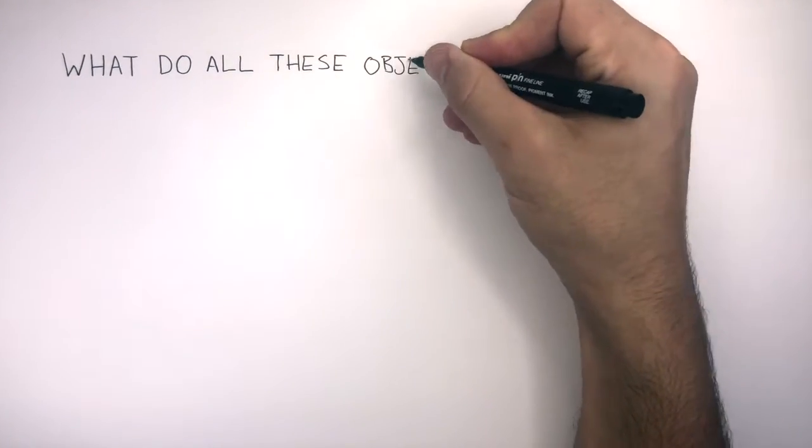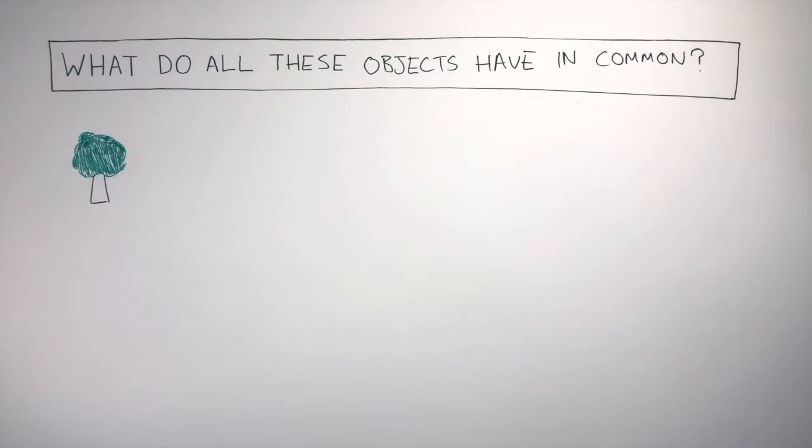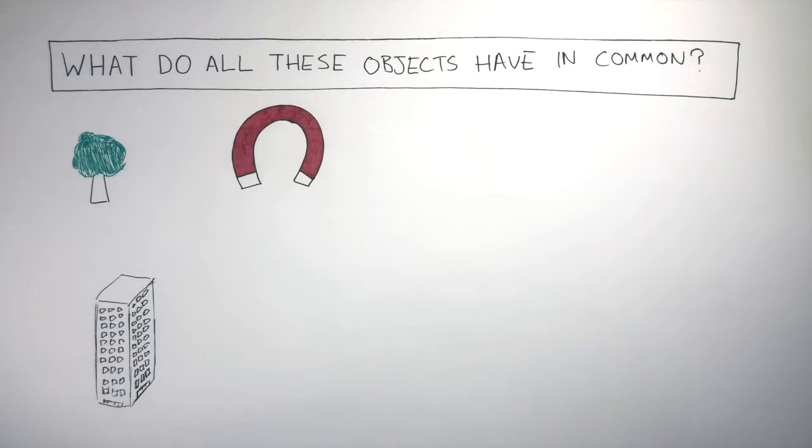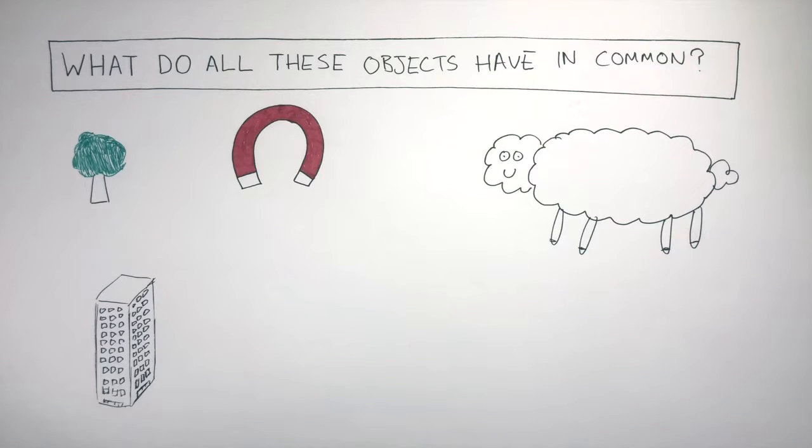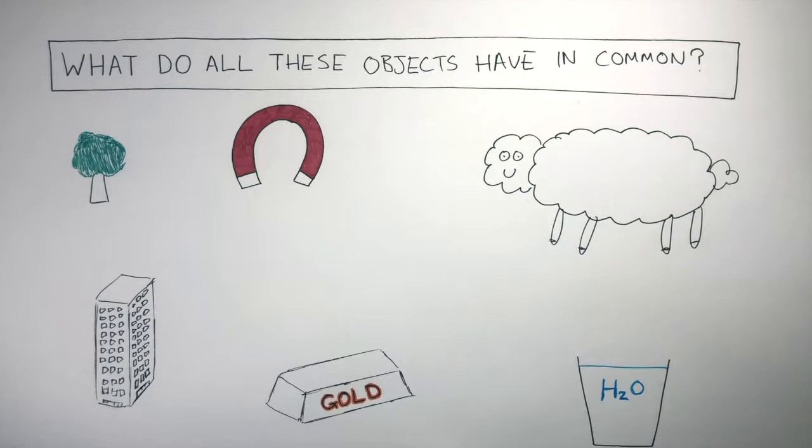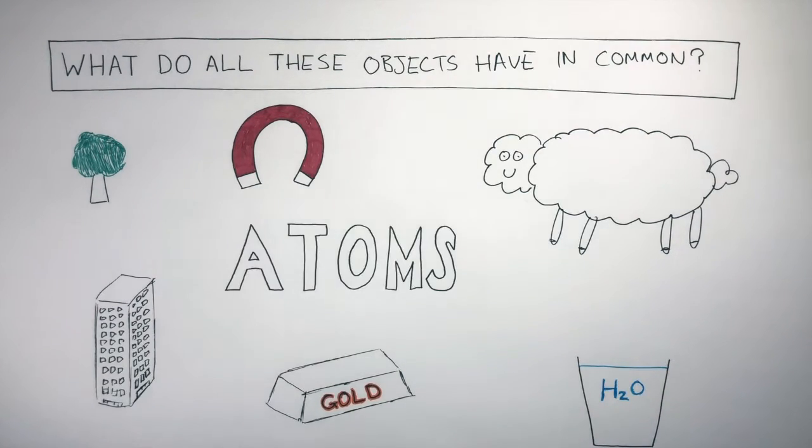What do all these objects have in common? A tree, a building, a magnet, a sheep, glass of water, and a bar of gold. What do they all have in common? Well, they're all made of atoms.